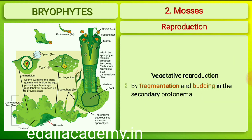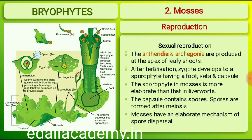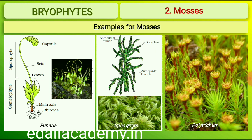Vegetative reproduction in mosses is by fragmentation and budding in the secondary protonema. In sexual reproduction, the sex organs — antheridia and archegonia — are produced at the apex of the leafy shoots. After fertilization, the zygote develops into a sporophyte consisting of a foot, seta and capsule. The sporophyte in mosses is more elaborate than that in liverworts. The capsule contains spores formed after meiosis. Mosses have an elaborate mechanism of spore dispersal. Common examples of mosses are Funaria, Polytrichum and Sphagnum.